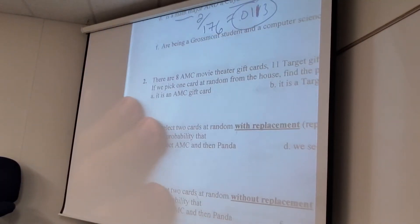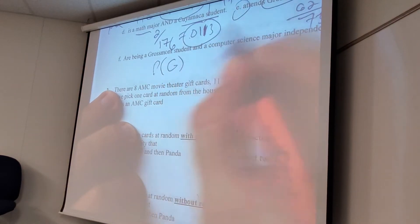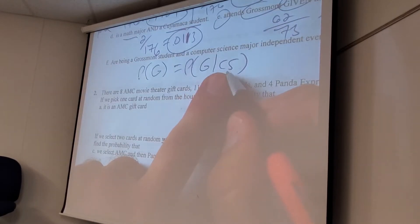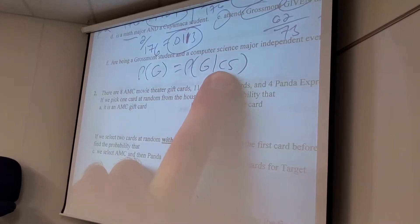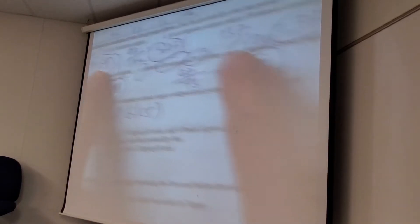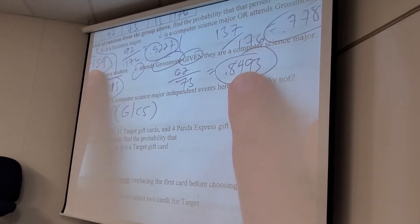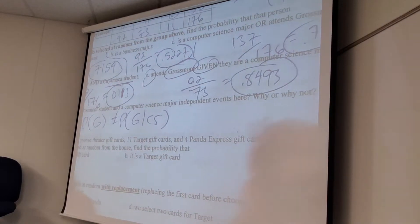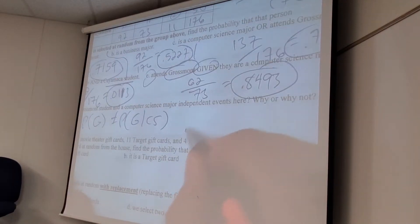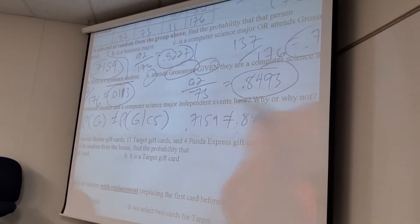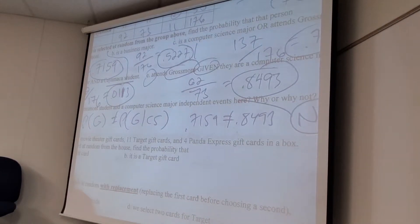So, I have to check. Is the probability of being a Grossmont student, is it equal to the probability that Grossmont given computer science? If computer science happens, if I know that's true, does the probability of being a Grossmont student stay the same? Is that true? Does the probability of being a Grossmont student stay the same if I know they're a computer science major? No. So, this is not equal to each other. And then put numbers. Show me. 0.7159 does not equal 0.8493. So, are they independent? No. Done.